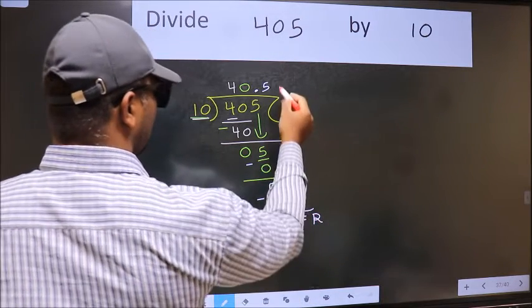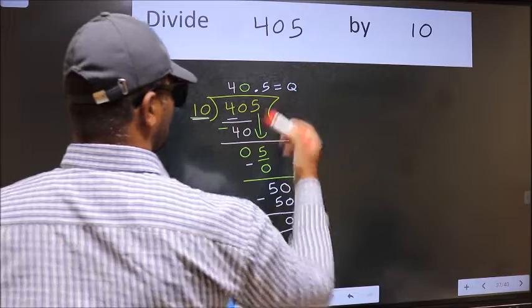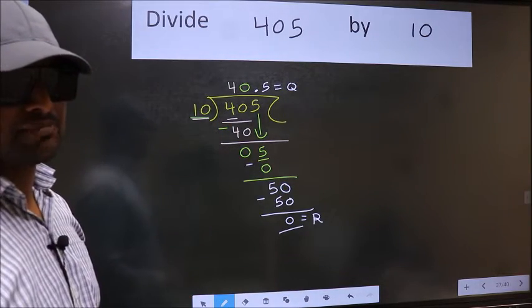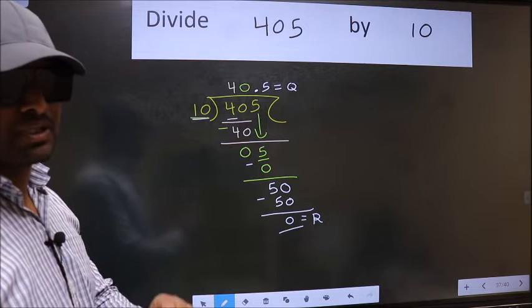This is our remainder. And this is our quotient. Did you understand where the mistake happens? You should not do that mistake.